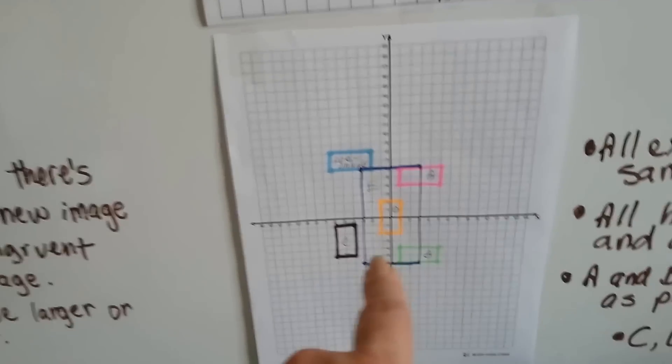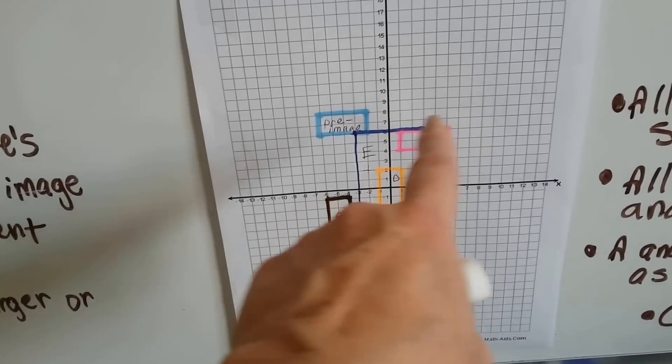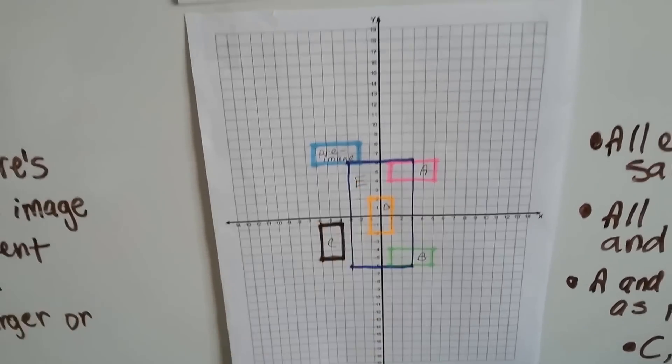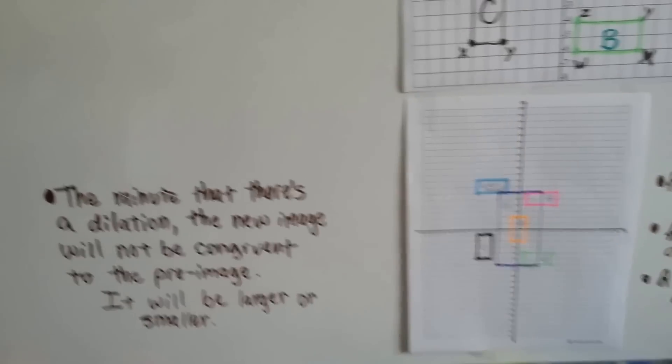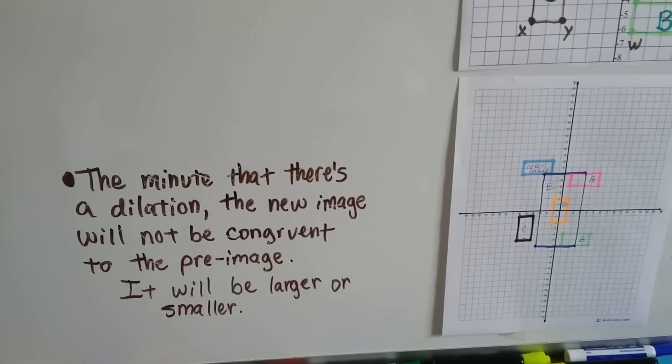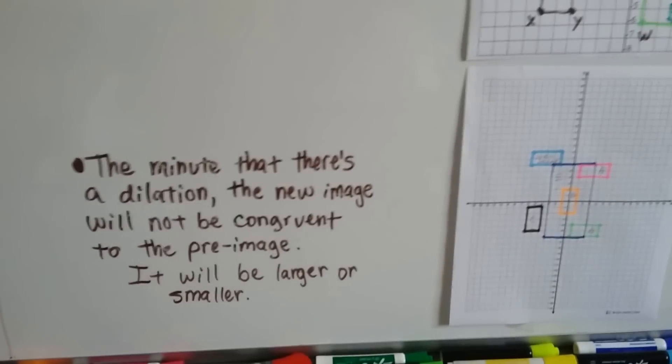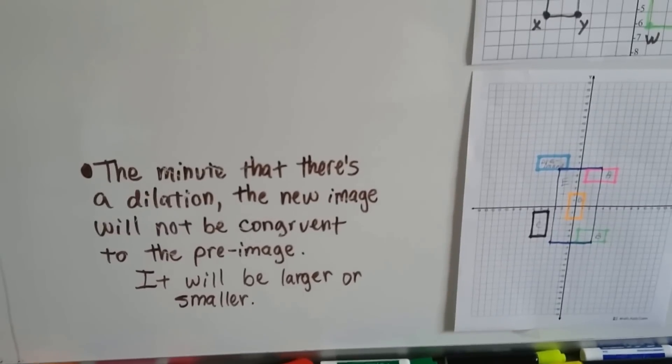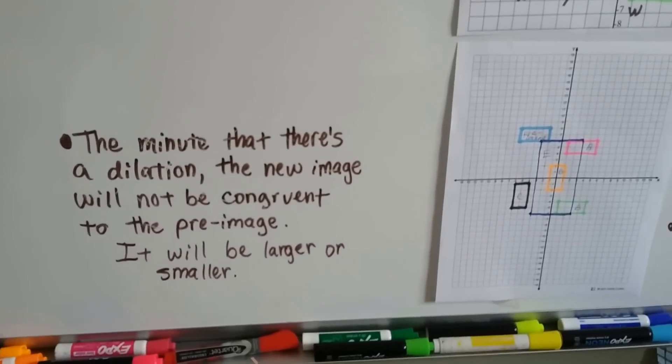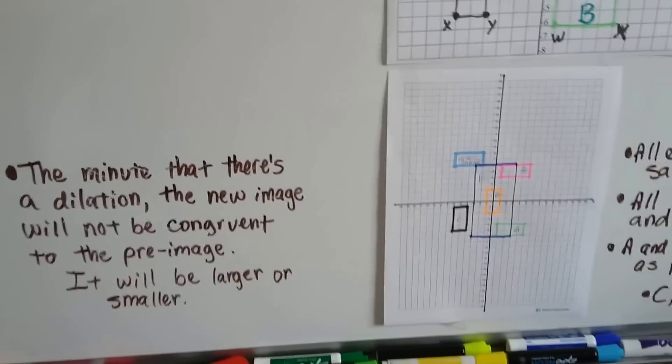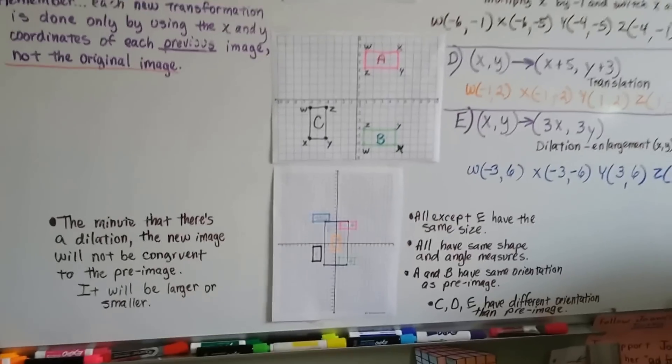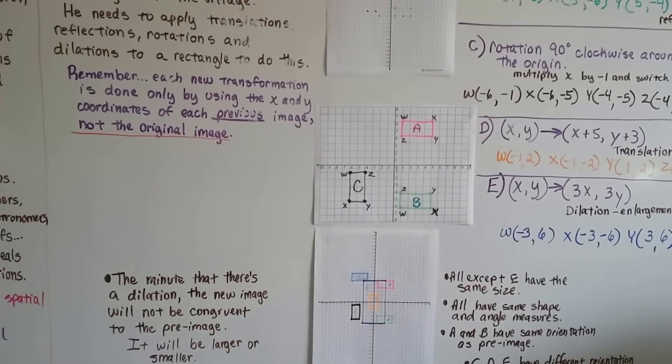Now look at E, this big navy blue rectangle that orange grew into. See this big, huge... The minute that there's a dilation, whether a reduction or an enlargement, the new image will not be congruent to the pre-image anymore or the previous image because it's going to be larger or smaller. No more congruency. See, that's the minute the size changed, that changed everything. It wasn't congruent anymore.